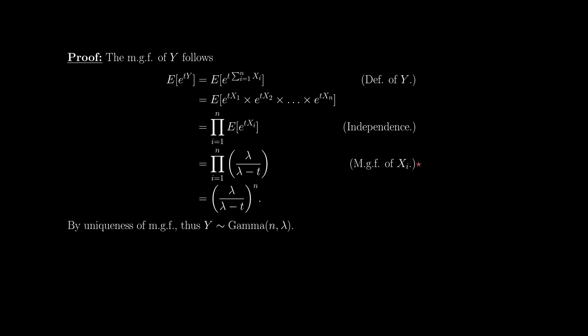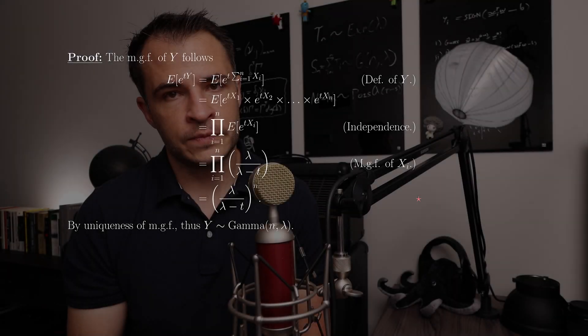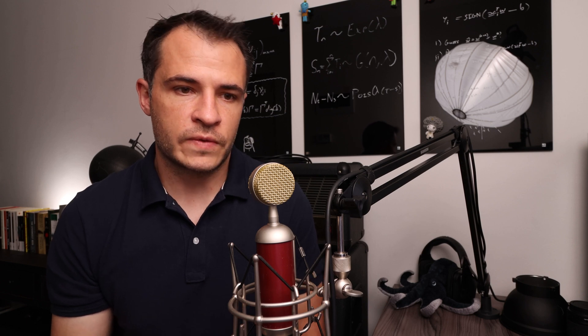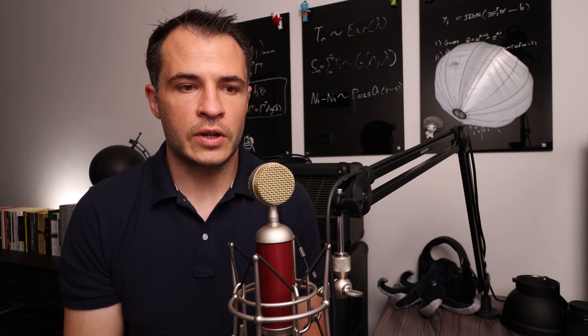Because those expressions are the same for all terms, we end up with the final expression [lambda/(lambda−t)]^n. By the uniqueness of the moment-generating function, y must therefore be distributed gamma(n, lambda). A very neat, simple, and useful result that we'll be using throughout the theory.